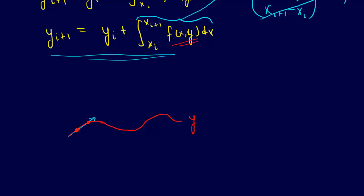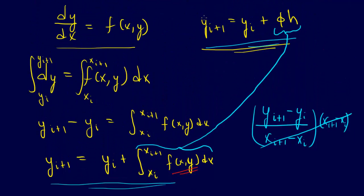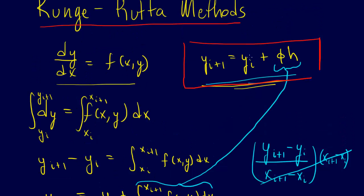It's taking the slope and moving along that slope. The only difference between each method is how we come up with our estimate of the slope. Again, to reiterate this point, the general form of the equation that we get with the Runge-Kutta methods is y_i+1 is equal to y_i plus phi times h.